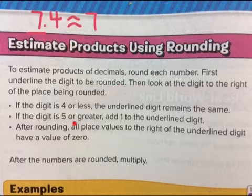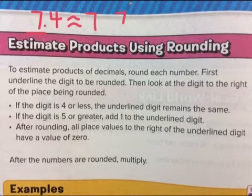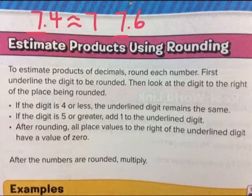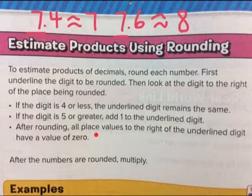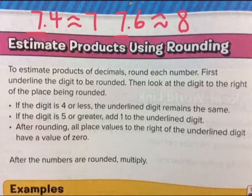But if the digit is 5 or greater, add 1 to the underlined digit. So for 7.6 or even 7.5, since the decimal part is 5 or greater, it's going to change to the next whole number — we add 1 to the underlined digit. After rounding, all place values to the right of the underlined digit have a value of 0. After the numbers are rounded, simply multiply.